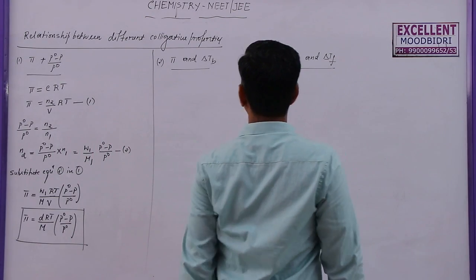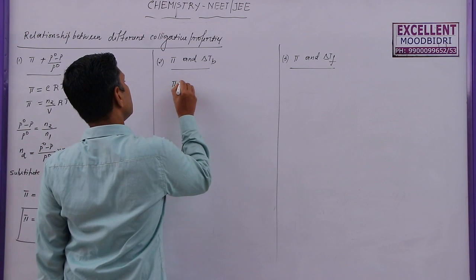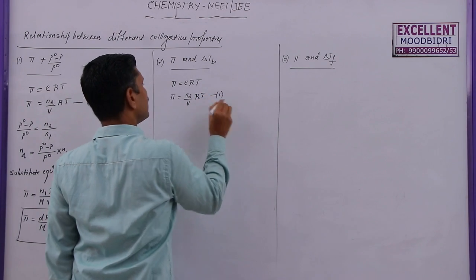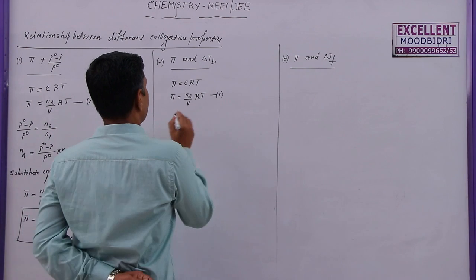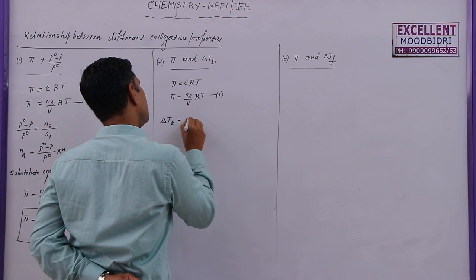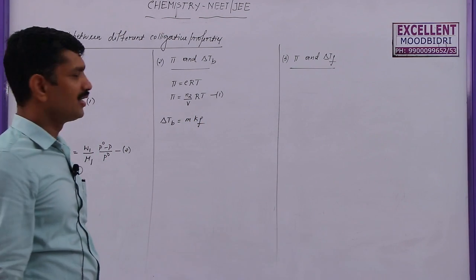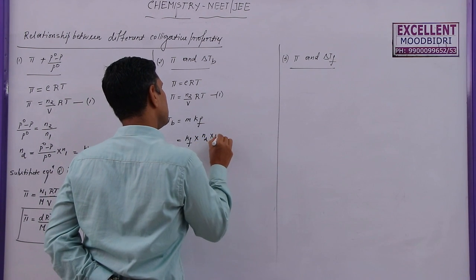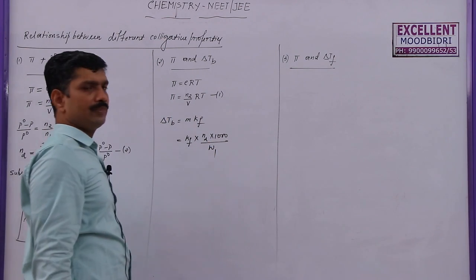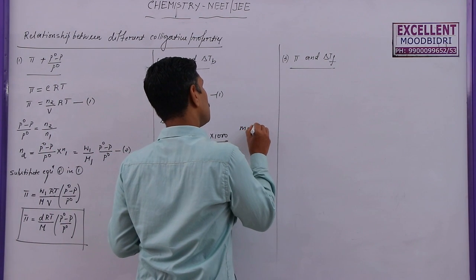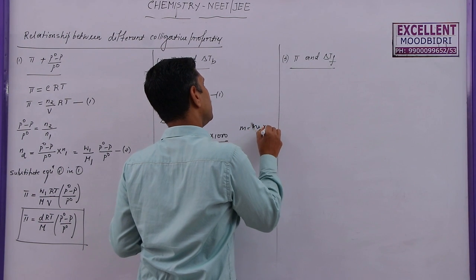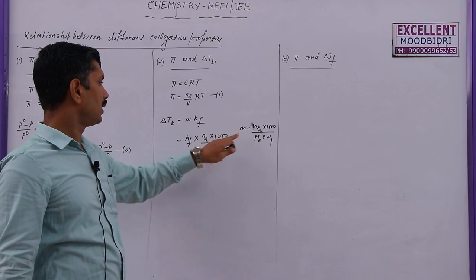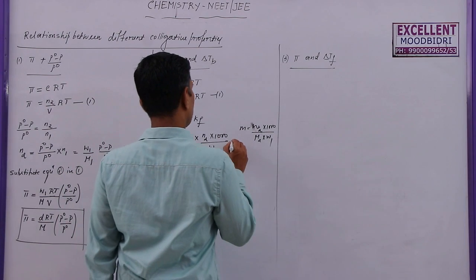Next, the relation between π and ΔTb. Once again, π = C·R·T, or π = n₂/V · R·T, taken as equation 1. For elevation of boiling point, ΔTb = M × Kb, where M is molarity. Molarity M = (n₂ × 1000)/w₁, so ΔTb = n₂ × 1000 × Kb / w₁. This is taken as equation 2.